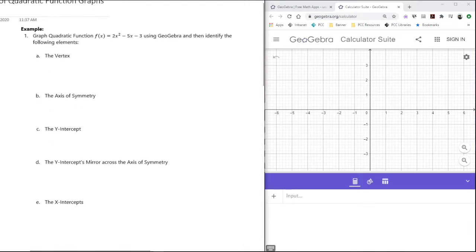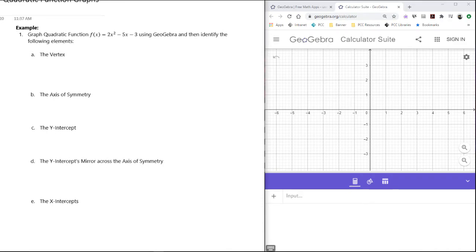We're going to look at this first example, where we're going to graph quadratic function f(x) = 2x² - 5x - 3 in GeoGebra, and then identify the following elements: the vertex, the axis of symmetry, the y-intercept, the y-intercept's mirror point across the axis of symmetry, and the x-intercepts.